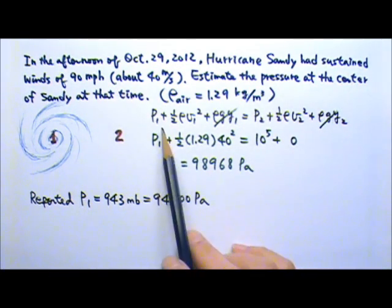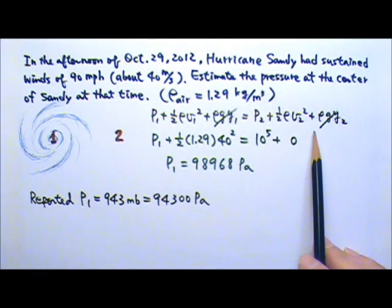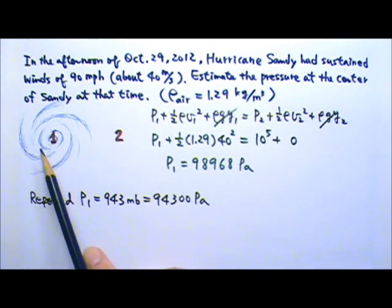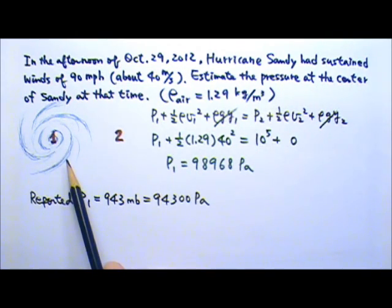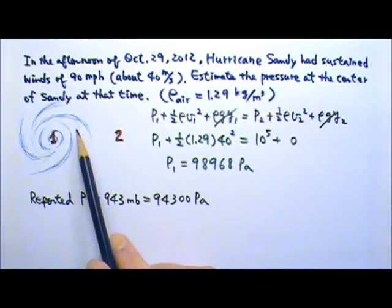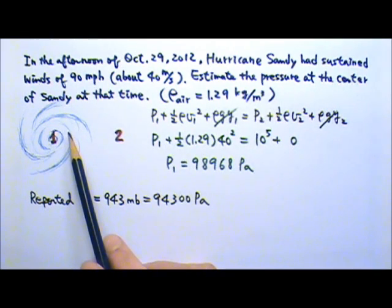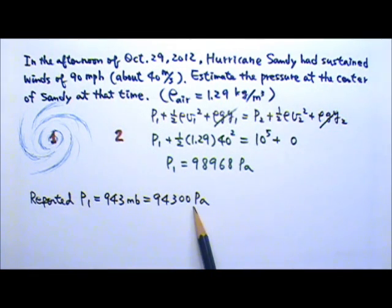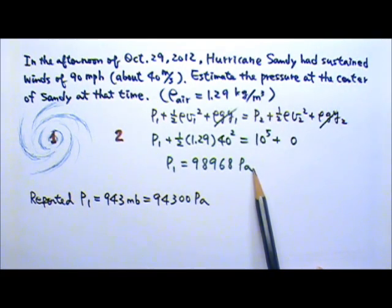Maybe this is because Bernoulli's equation is for steady flow of incompressible fluid with no viscosity. The atmosphere certainly is compressible, has viscosity, and the stormy airflow is not steady. Viscosity and turbulent flow can cause a lot of mechanical energy loss. Therefore the real pressure should be lower than the estimated value from our ideal model.